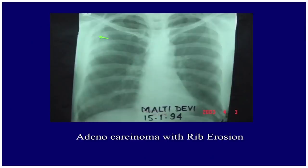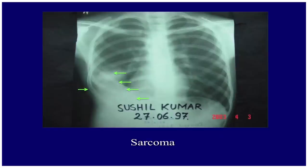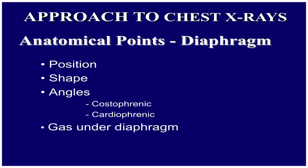In one X-ray, a shadow on the right upper zone with an eroded rib was found and the patient was finally diagnosed as adenocarcinoma. In another case, missing posterior ends of multiple lower ribs with soft tissue bulging was diagnosed as sarcoma. After soft tissue and bony cage, you examine the diaphragm under four headings: position, shape, costophrenic and cardiophrenic angles, and gas under the diaphragm.